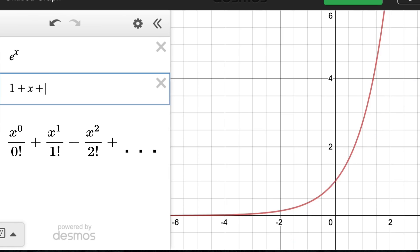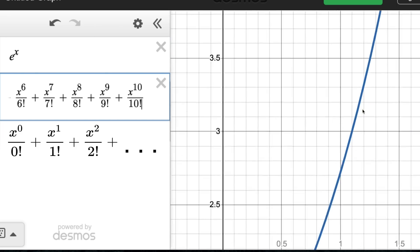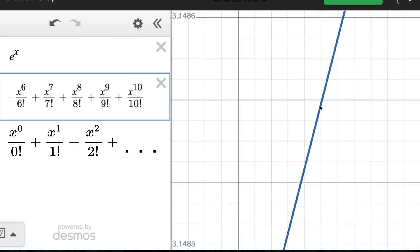Then after we graph the next term of x to the second over 2 factorial, the plot looks even closer to e to the x. Here we can see three terms, four terms, and I'll go up to 10 terms. Here you can see the series is definitely getting really close to e to the x. We really have to zoom in a lot just to see the differences.